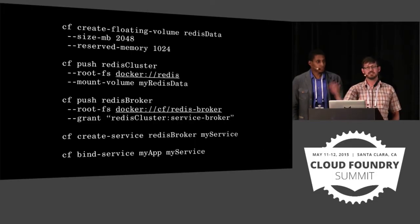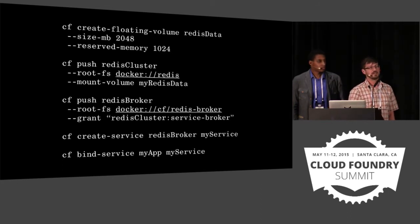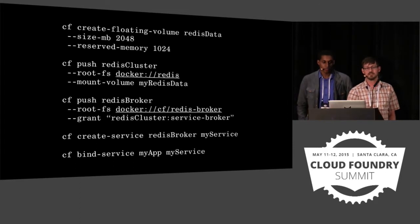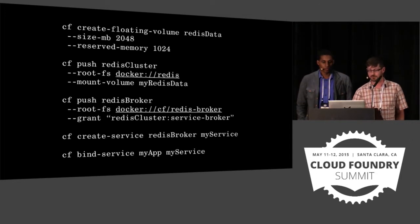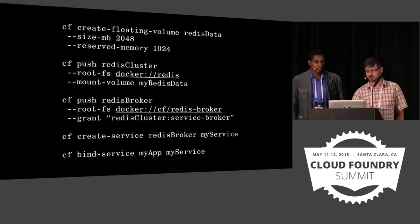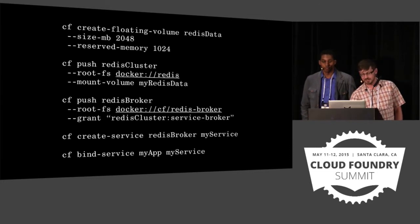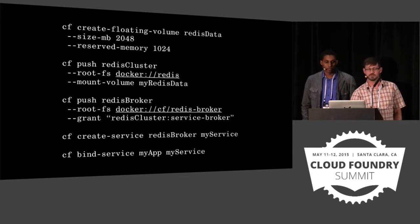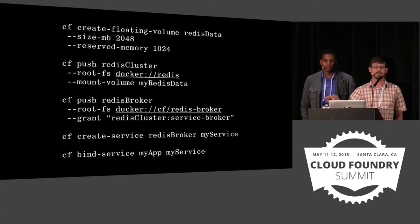That would allow the broker to see the addresses of individual members of the Redis cluster and allow it to scale up, scale down, and access administrative ports — whatever things you need to actually be the broker. Once you set up this Redis broker, the system notices it's a broker. You can then use create-service to create a service instance off that broker, and then bind that service to an application. So now you have an application using Redis, the Redis broker, and the Redis cluster — all running on one platform. That's the goal.